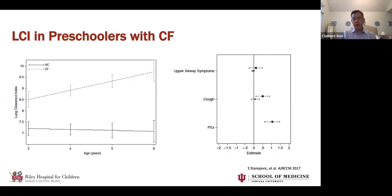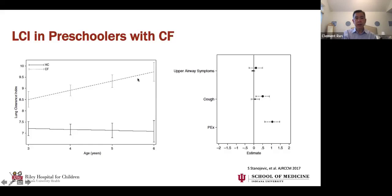LCI has also shown itself to be very useful in the evaluation of preschoolers with CF. A longitudinal study conducted by UNC, Indiana University, and Toronto followed a cohort of preschool-aged children with CF, doing periodic LCI measurements as well as during times of illness. LCI rose significantly from a mean of around 8.5 to about 9.7 over three years, while a healthy control cohort showed no change — confirming that LCI tracks with progression of disease.